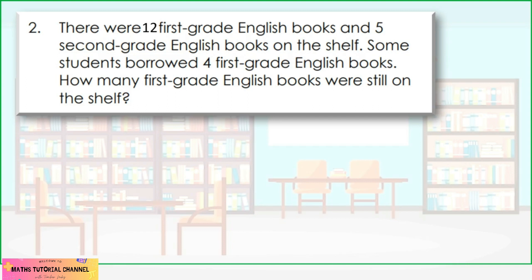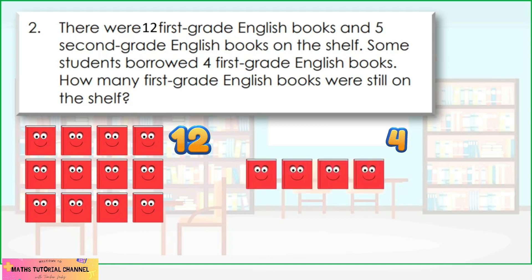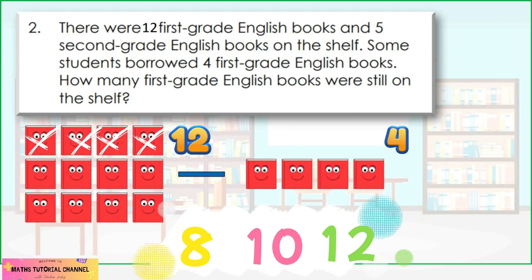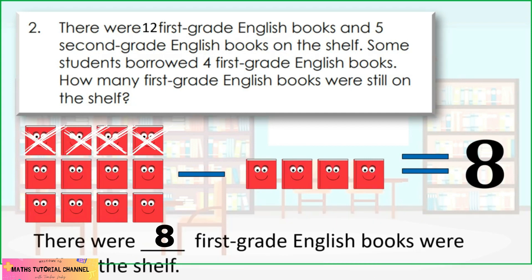Second problem: there were 12 first-grade English books and 5 second-grade English books on the shelf. Some students borrowed four first-grade English books. How many first-grade English books were still on the shelf? There were 12 first-grade English books, and students borrowed four. We subtract four. The answer is eight. You did a great job! There were eight first-grade English books still on the shelf.